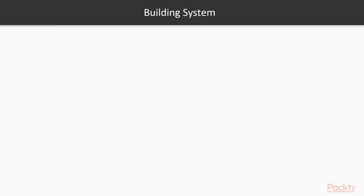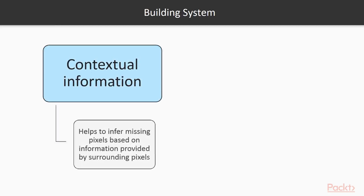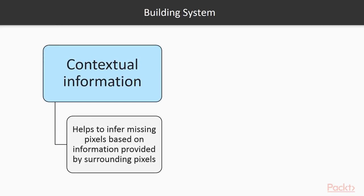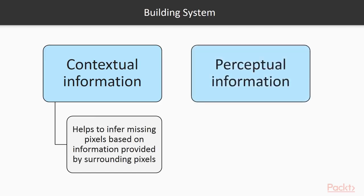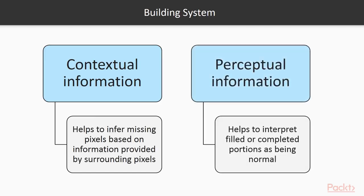Building a system that can fill in the missing pieces broadly requires two pieces of information. First is the contextual information that helps to infer missing pixels based on information provided by the surrounding pixels. The next one is perceptual information that helps to interpret the filled or completed portions as being normal, as seen in real life or other pictures.